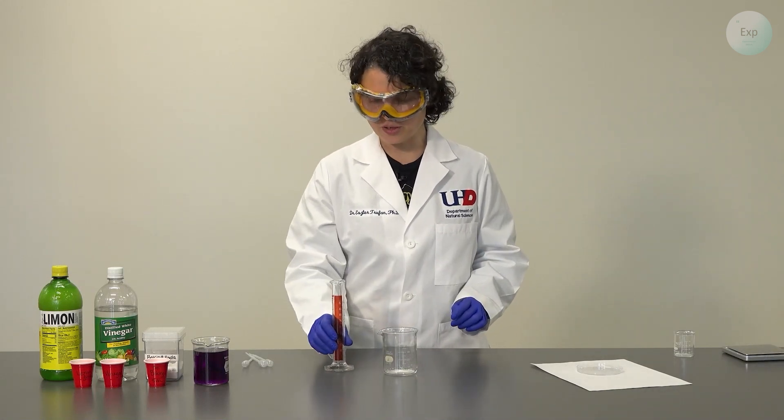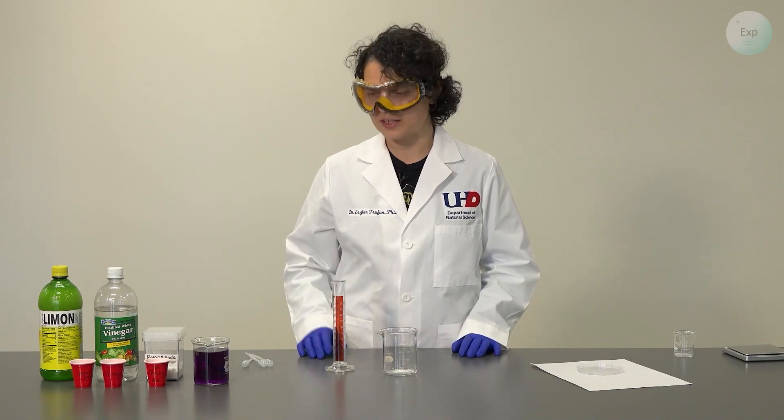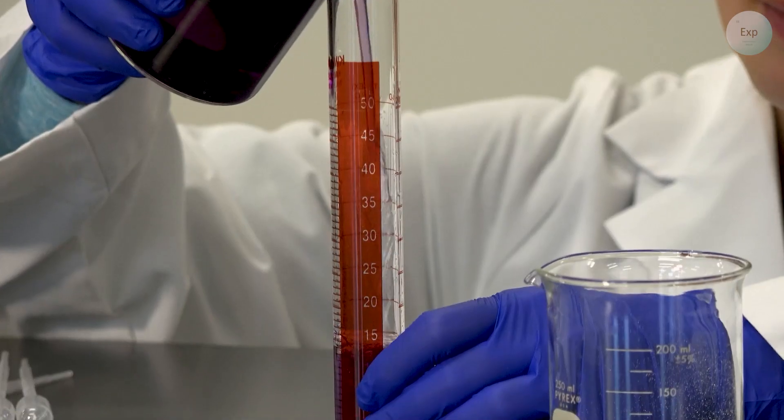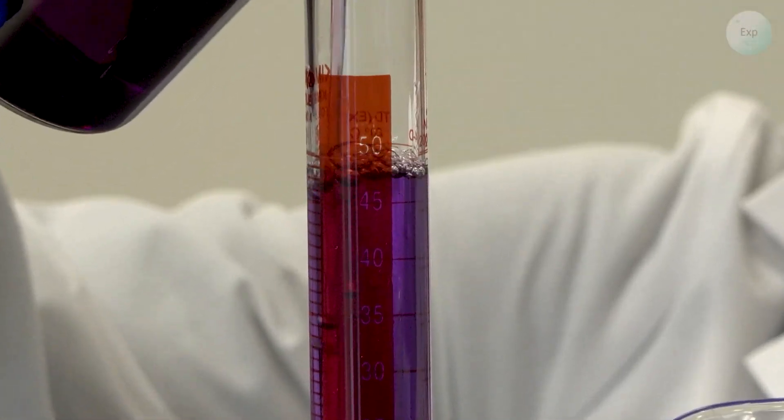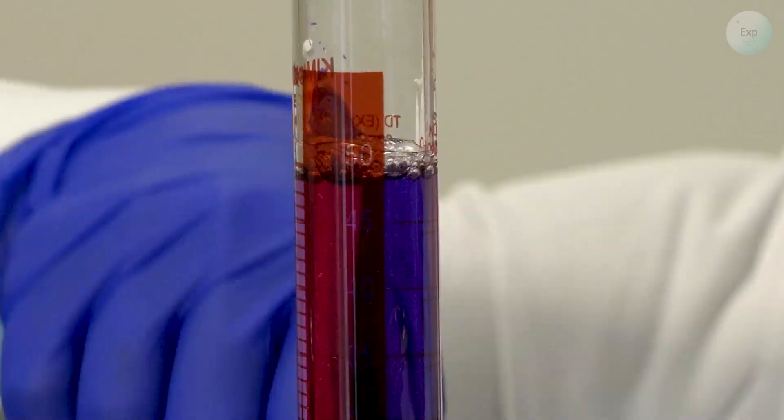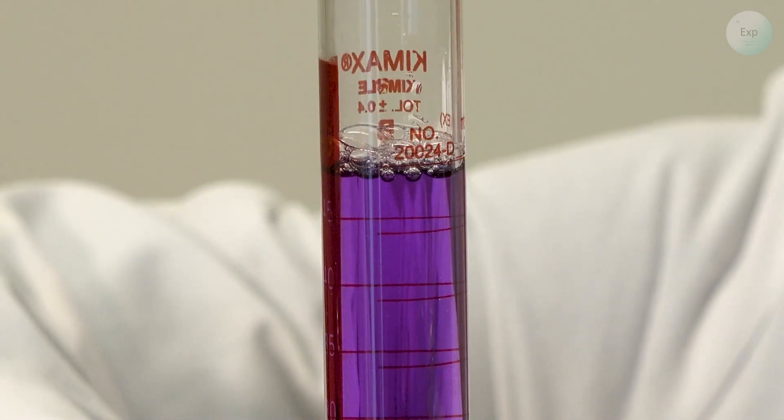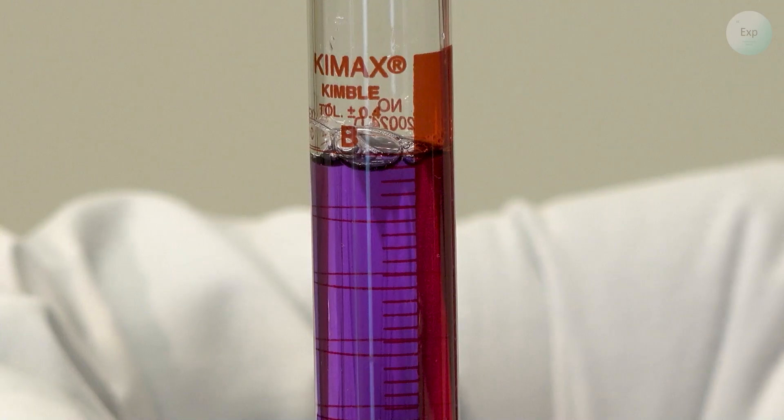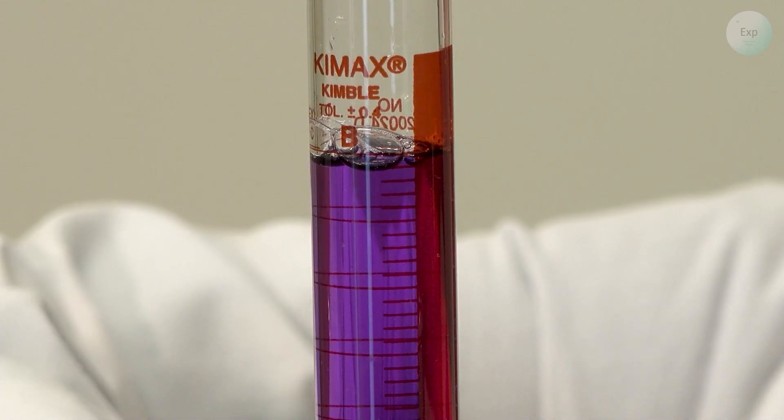Next I am going to measure approximately 50 milliliters of the indicator solution. And if there are bubbles, we have to wait for them to dissipate. We have 49.0 milliliters of indicator solution.